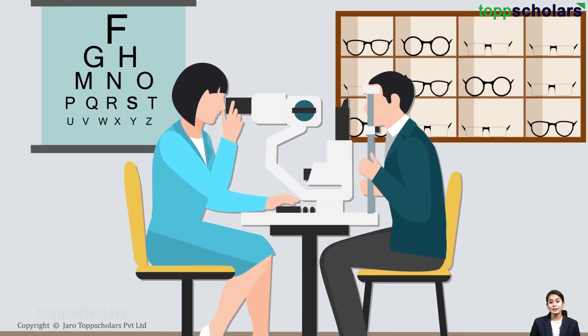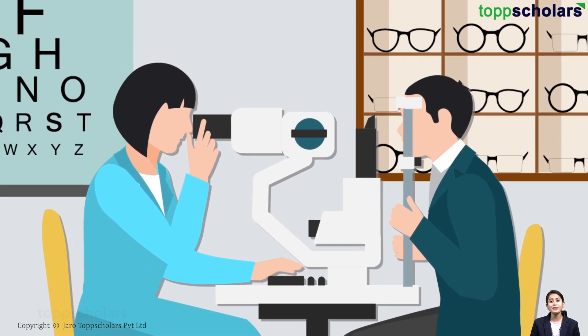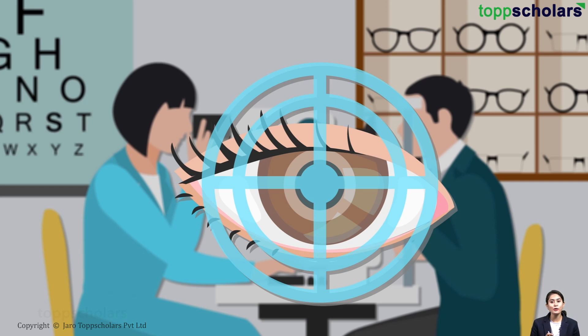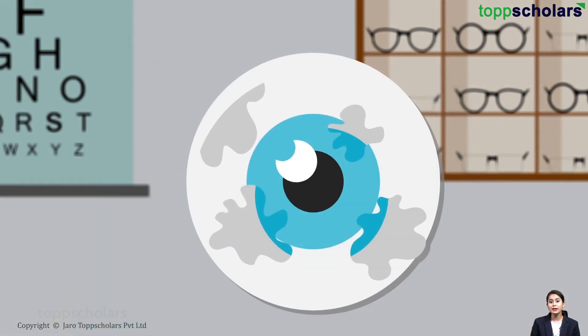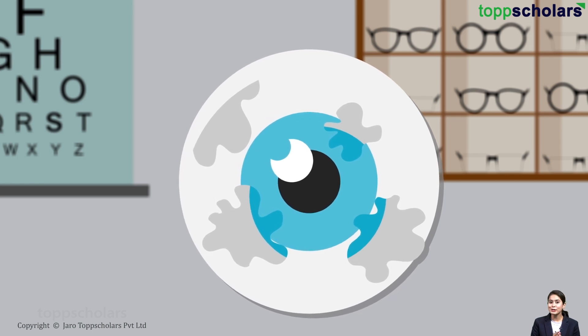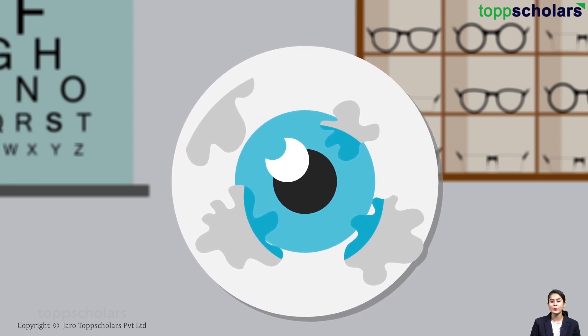Ophthalmoscope consists of a concave mirror with a hole in the center. The doctor sees through the small hole from behind the concave mirror and the light beam is directed into the pupil of the patient's eye. This makes the retina visible and the doctor can easily check the patient's eyes.